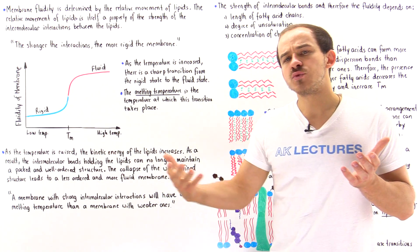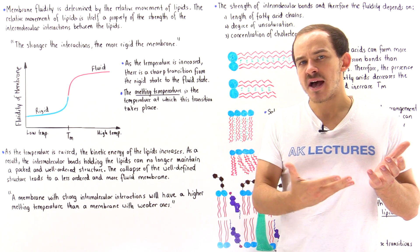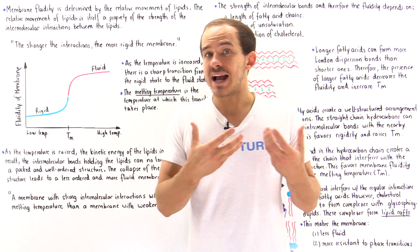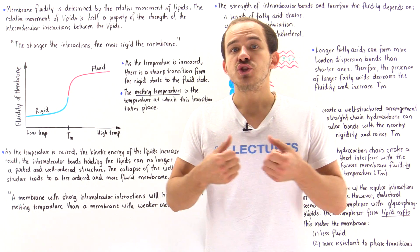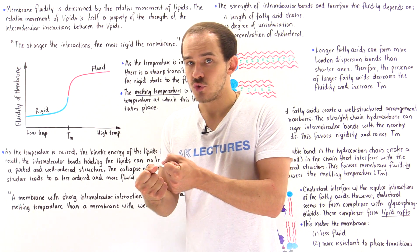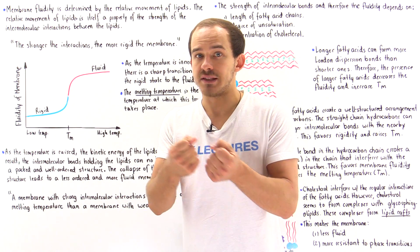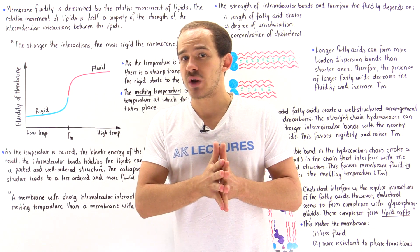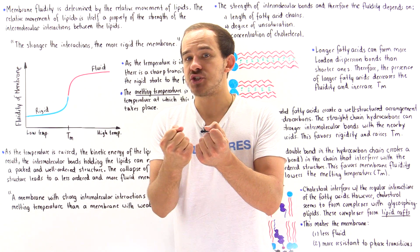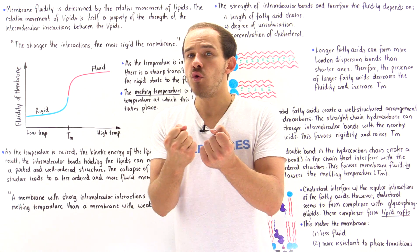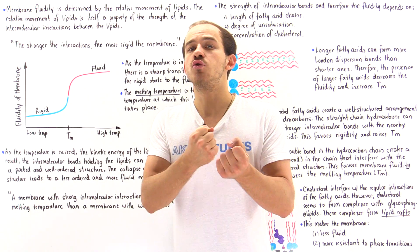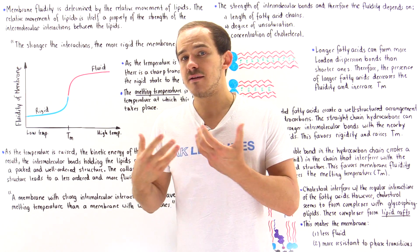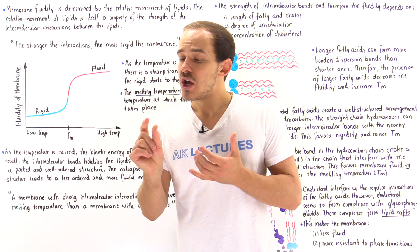As we increase the temperature, we are essentially transferring kinetic energy to the molecules — the lipids and proteins within that membrane. These phospholipids basically move with a greater velocity.